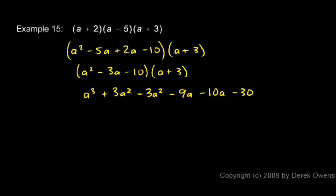Now I'll combine some like terms. a cubed is the only a cubed term, so I just write it down. Then I have 3a squared and a negative 3a squared. Those two cancel each other out, which is kind of nice.